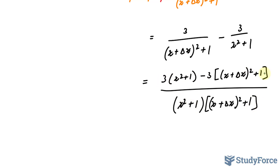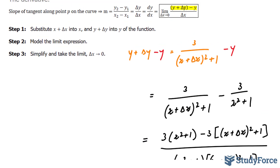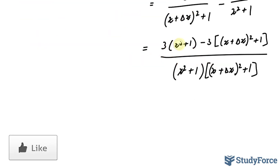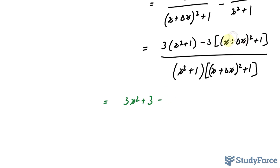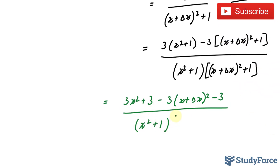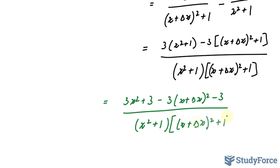Our next step is to expand the numerator, keeping in mind that this whole expression is the numerator of this limit — we haven't included the delta x yet, but we will. So 3 times x squared plus 1 gives us 3x squared plus 3. Negative 3 times those two terms gives us negative 3 bracket x plus delta x squared, minus 3. All over x squared plus 1; the denominator has not changed.